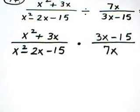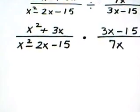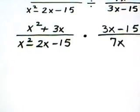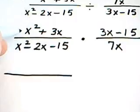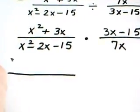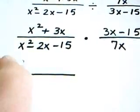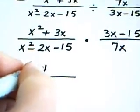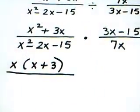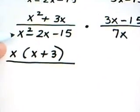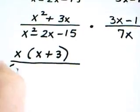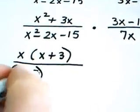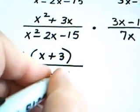Now, a multiplication problem is best worked by factoring first and seeing what we can get to cancel. So if I take this first numerator, which is x squared plus 3x, I factor out an x, and in parentheses I have x plus 3. When I look at this denominator, which is a trinomial, I factor it as x minus 5 times x plus 3.